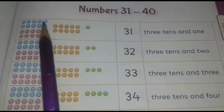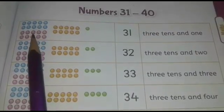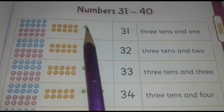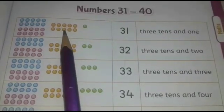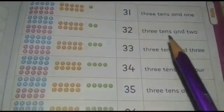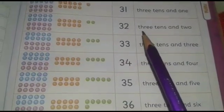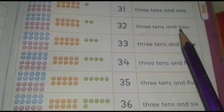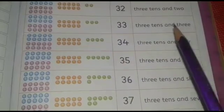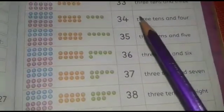Here 3 tens. This is 1 tens, 2 tens, 3 tens. This is 1. 3 tens and 1 is 31, is it? Yes. 3 tens and 1 is 31. 3 tens and 2 is 32. 3 tens and 3 is 33. 3 tens and 4 is 34.